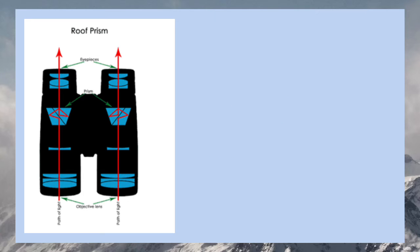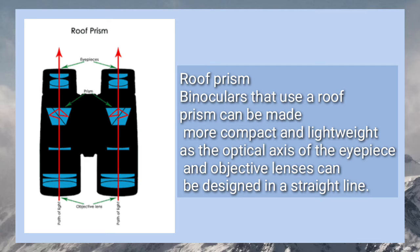Roof prism binoculars can be made more compact and lightweight, as the optical axis of the eyepiece and objective lenses can be designed in a straight line.